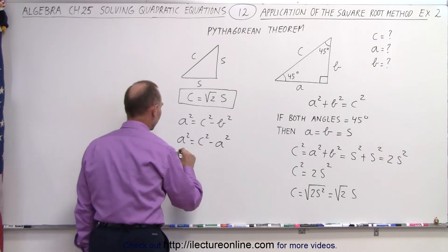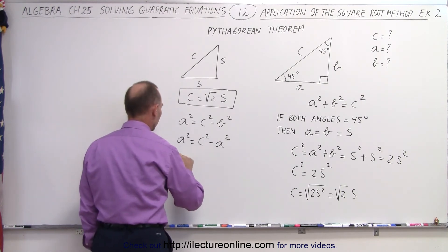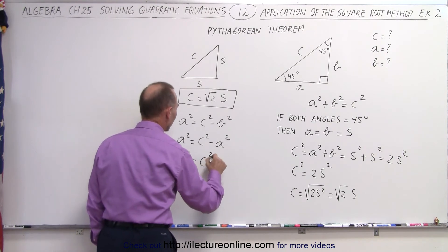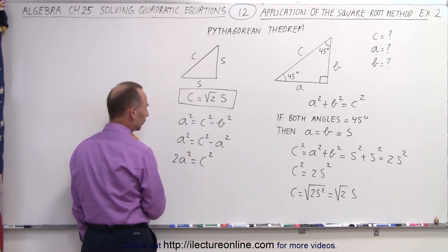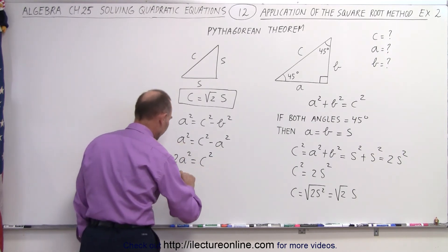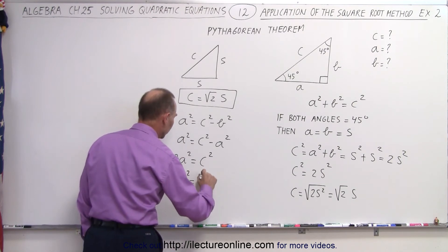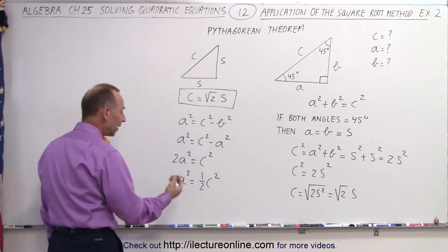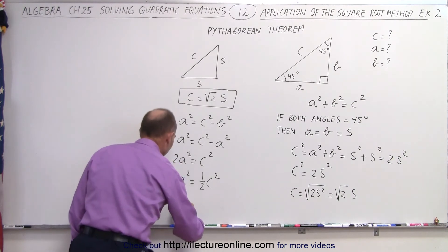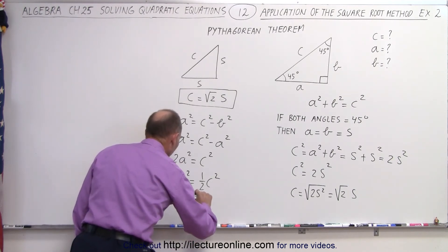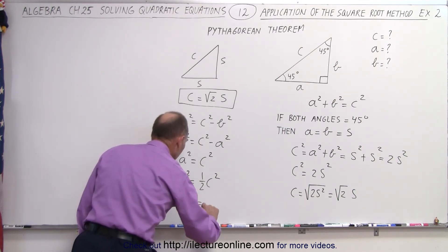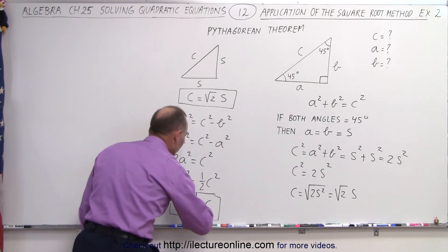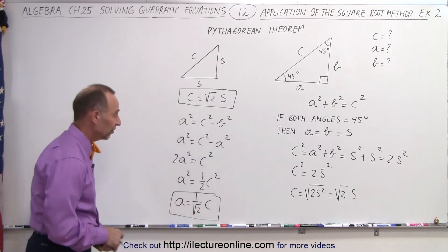Bringing this over, I can say that 2A squared is equal to C squared, because I bring the left side over — I have two of them. Dividing both sides by two, A squared is equal to one half C squared. Taking the square root of both sides, A is equal to 1 over the square root of 2 times C. That would be a better way to express A.